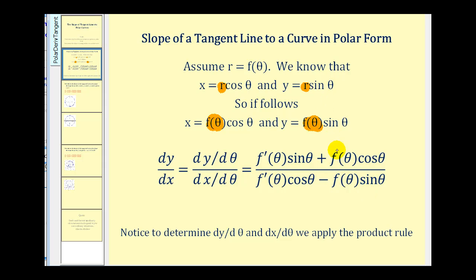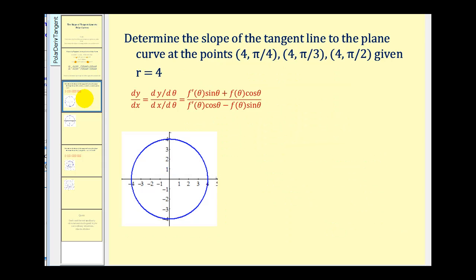You may want to take a moment and try to derive this by applying the product rule yourself. Now let's look at a couple of examples. We want to determine the slope of the tangent line to the plane curve at three points, given that r equals four. If r equals four, then f of theta equals four, and we can apply our formula for dy/dx.